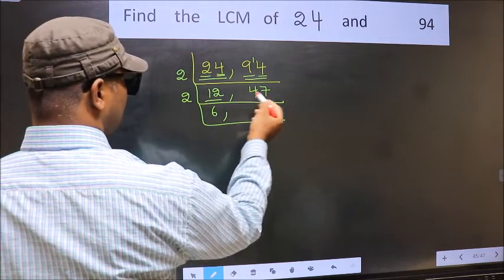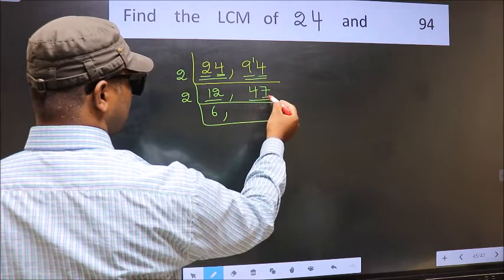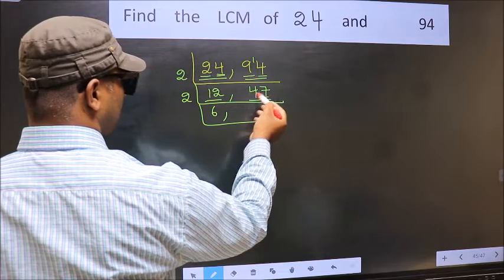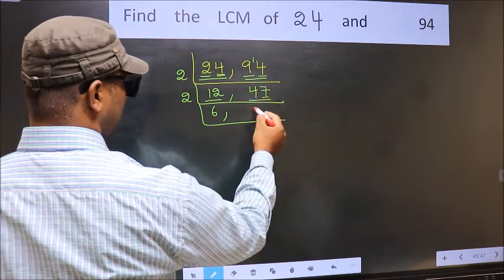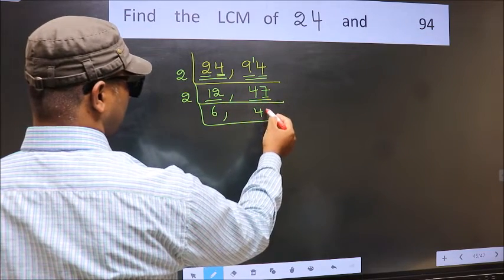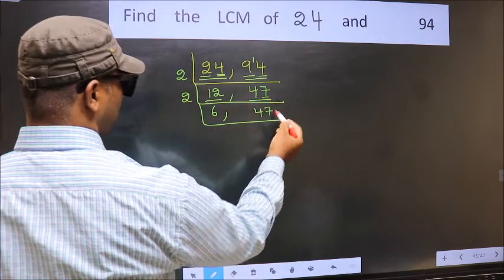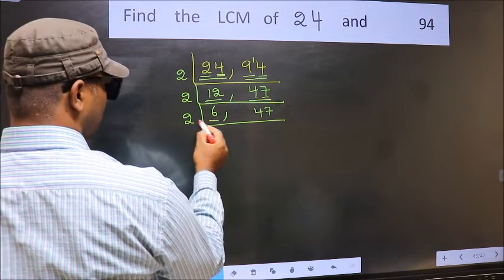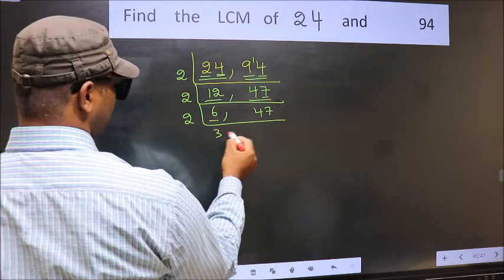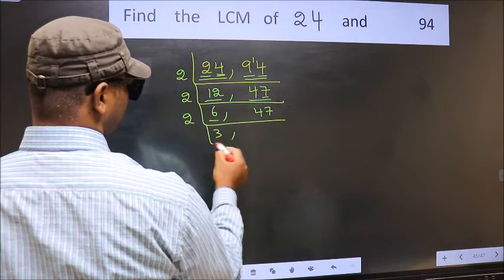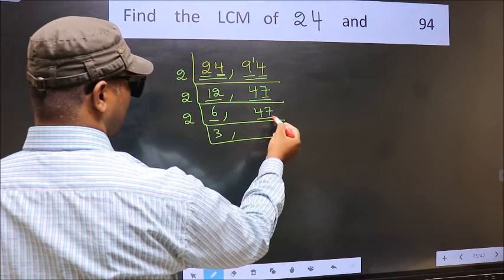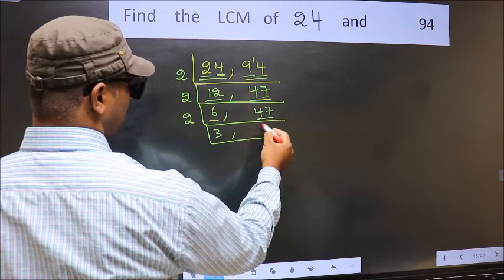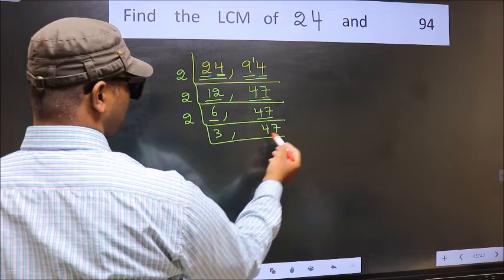The other number 47 — last digit 7, not even. So not divisible by 2, we write it down as it is. Now here we have 6: 6 divided by 2 is 3. The other number 47 is not divisible by 2, so we write it down as it is.